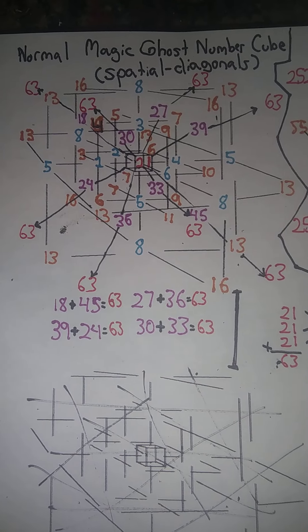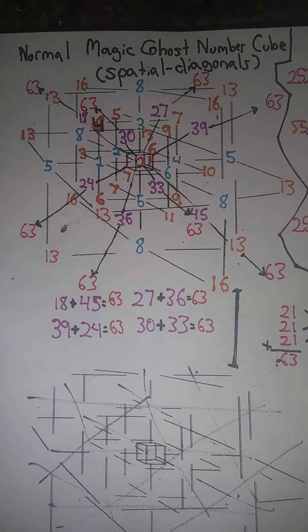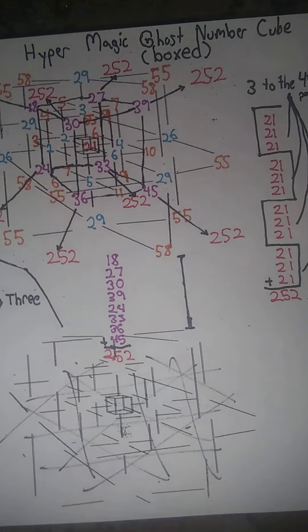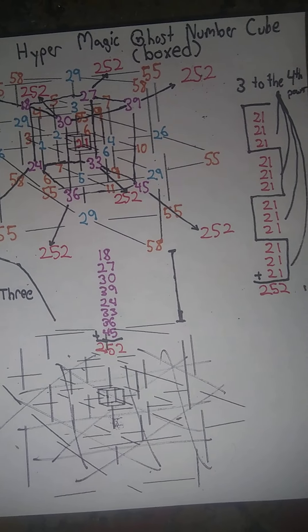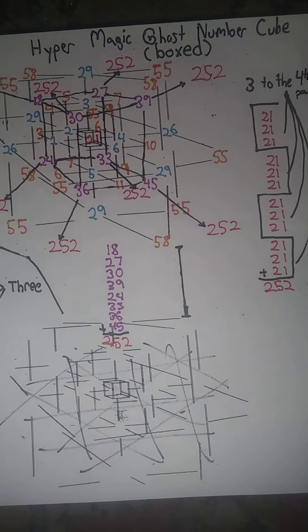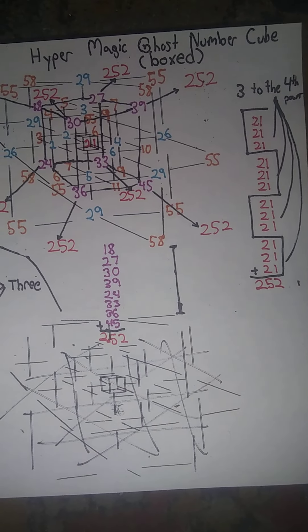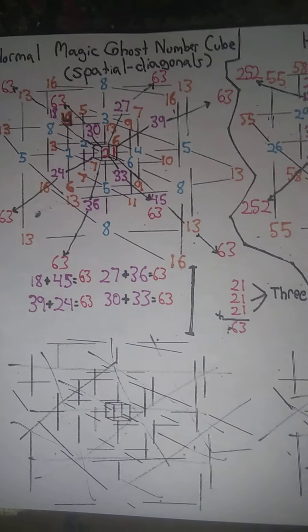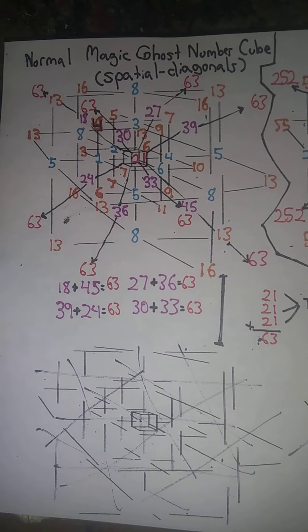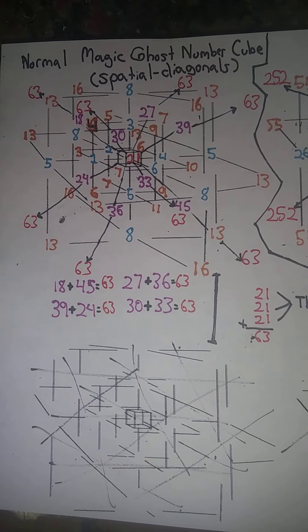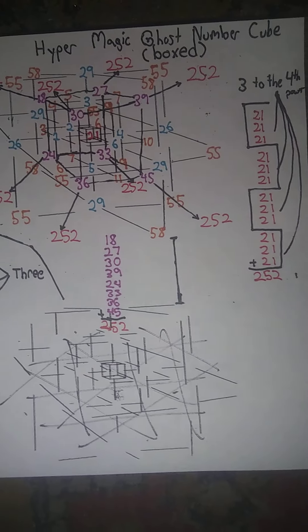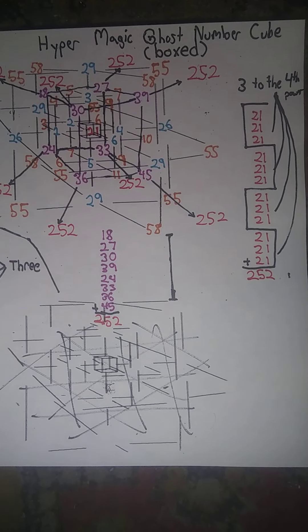Here's a good look at it again. There's the normal magic ghost number cube with spatial diagonals, and this is a hyper magic ghost number cube, boxed. Thanks a lot for watching.